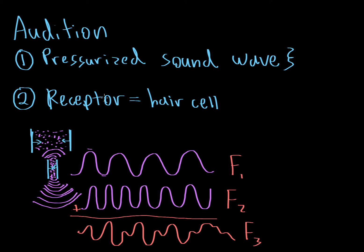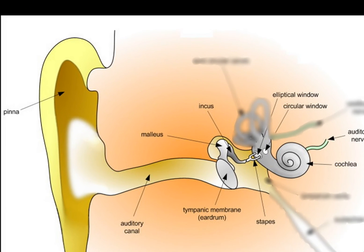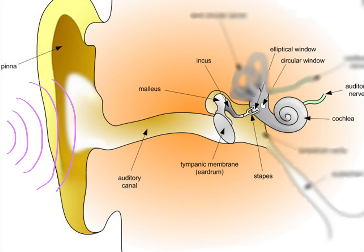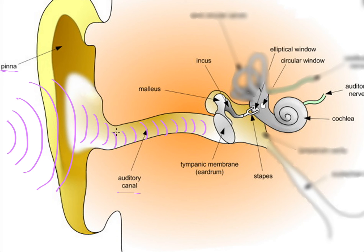Now let's look at the receptor. You've got these sound waves moving away from the source — what happens next? Looking at a diagram of the ear: the sound waves first hit the outer part of the ear that you can actually see, called the pinna. The pinna diverts these sound waves down a structure called the auditory canal, so sound travels from outside your head through the auditory canal. The first structure the sound waves actually hit inside is called the tympanic membrane, or eardrum, and it starts vibrating back and forth at the same frequency as the incoming sound waves.